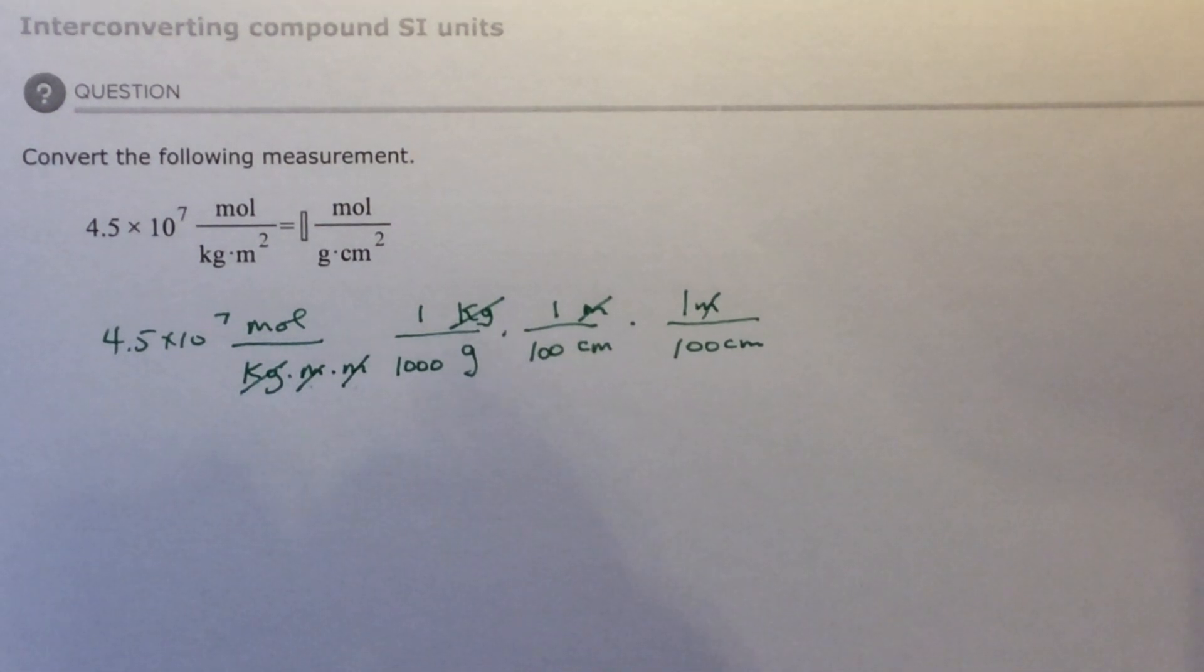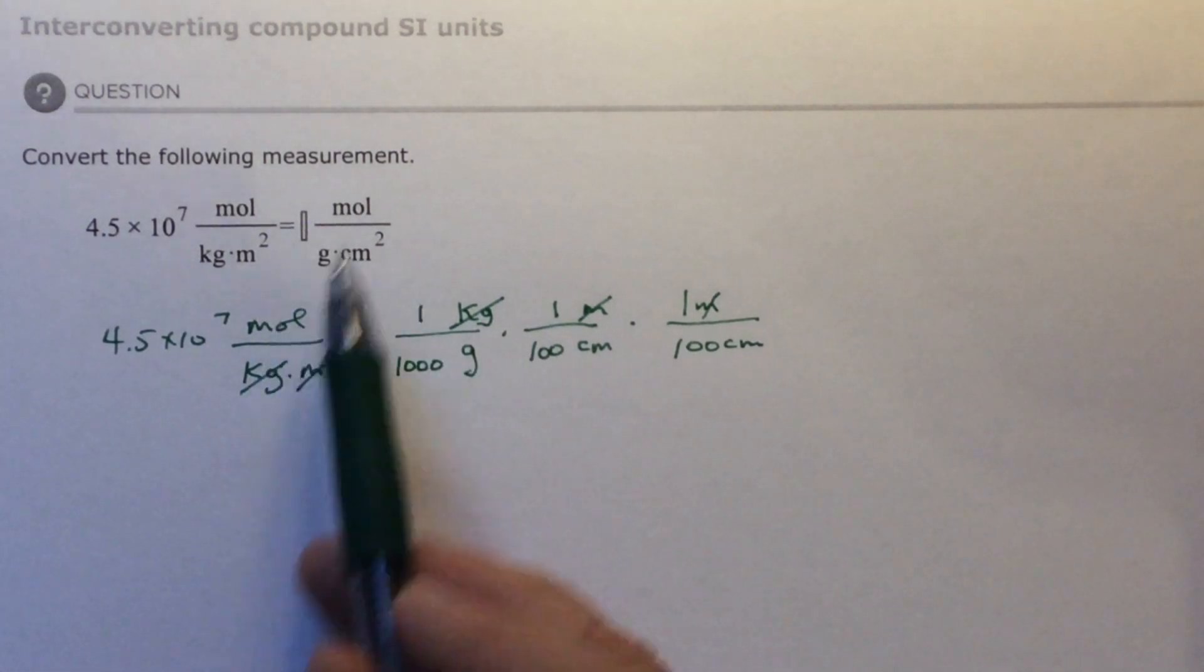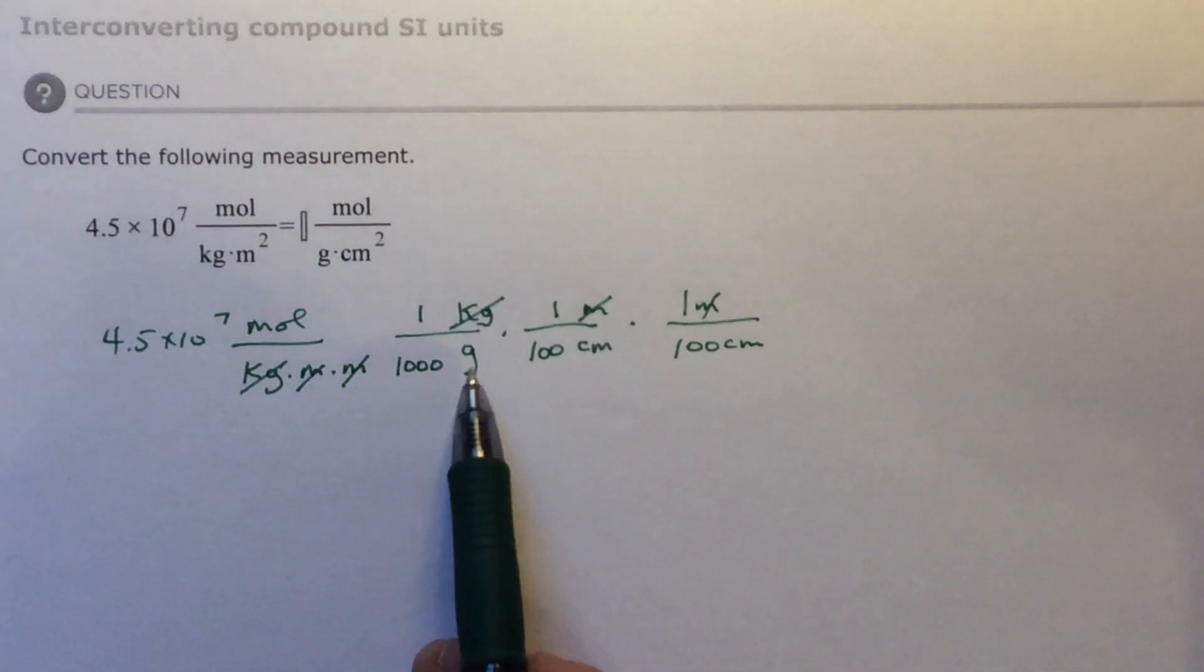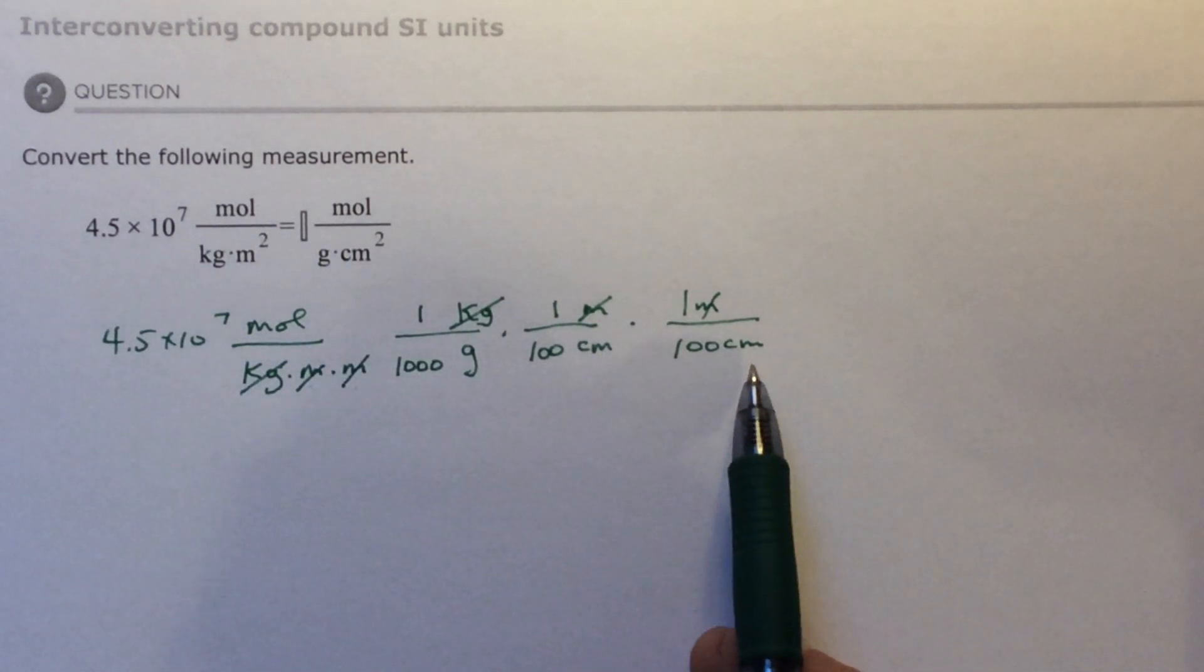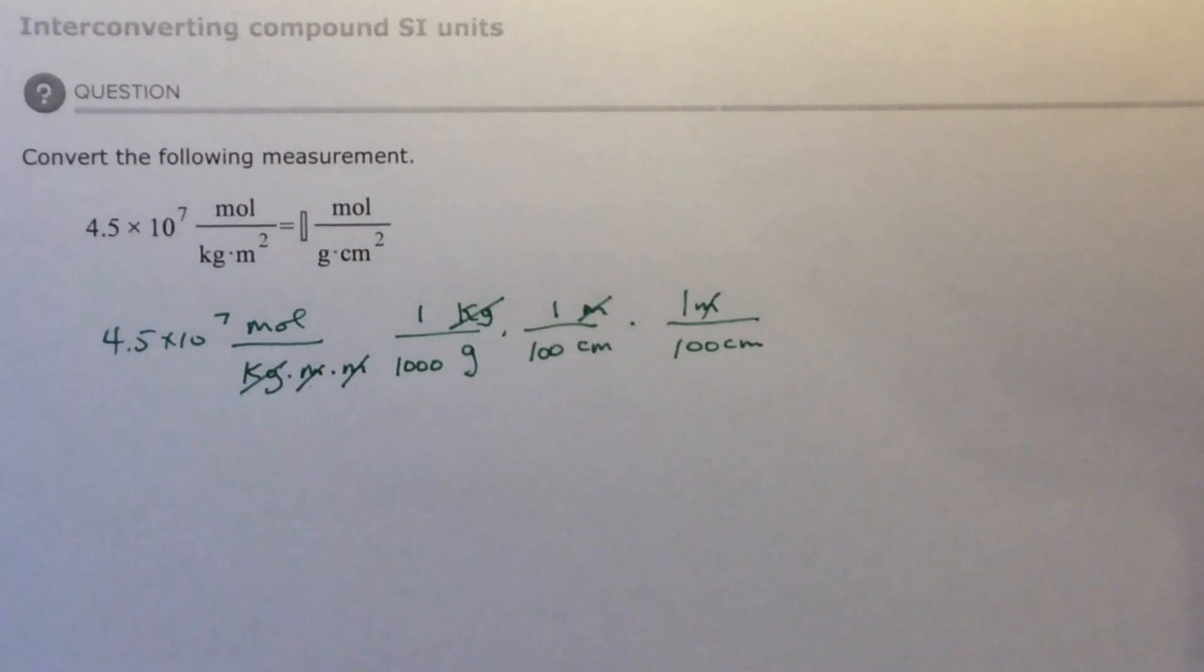Now let's check to see if we have everything we need. We have moles on top, which we want. We have grams on the bottom, which we want. We have centimeters times centimeters, which is centimeters squared on the bottom. So everything is ready. We just need to do the math.